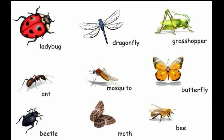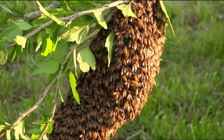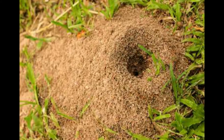Insects that live in a colony or community are called social insects. Insects like bees, ants, termites and wasps come under this category. They work in a team to build their home, to find food and to raise young ones. Honey bees collect nectar from flowers and store it in their hives, where it gets converted into honey. Ants live in ant hills.